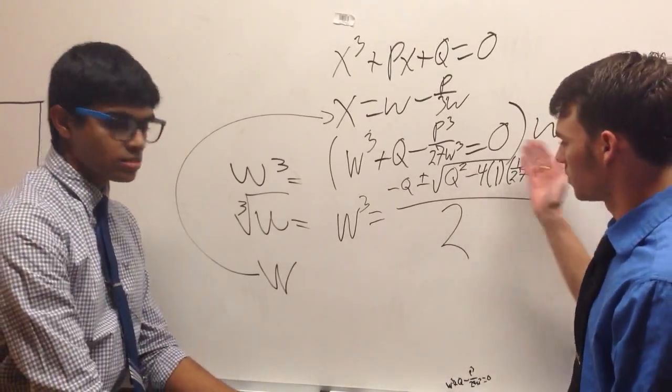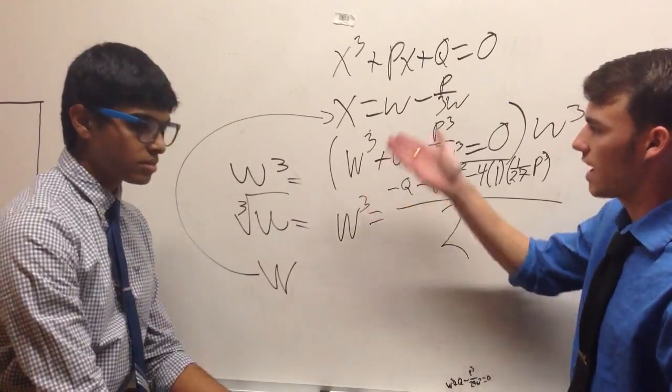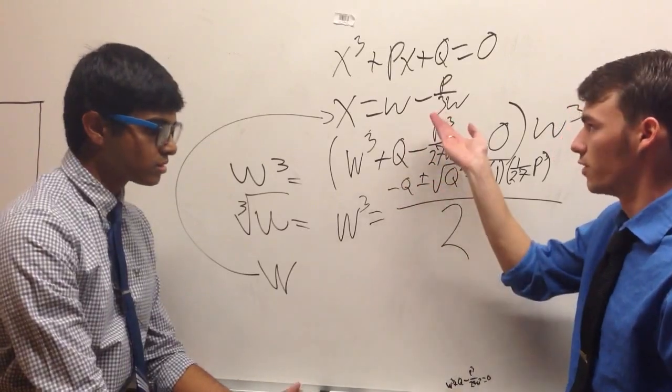So, multiplying by w cubed gets us a form we can easily plug into the quadratic equation. And then from there, we can take our cubed root, and back into our original substitution, gives us two roots for x, which solves our original cubic equation.